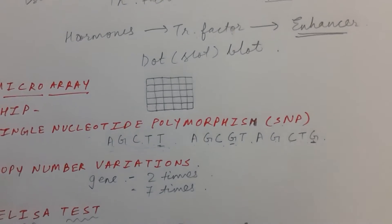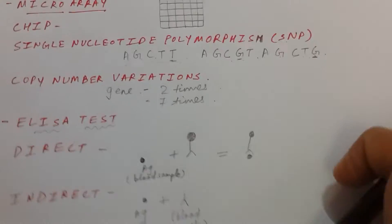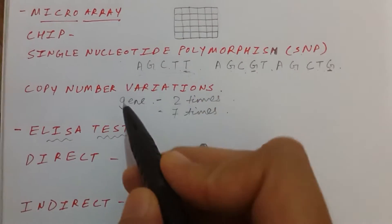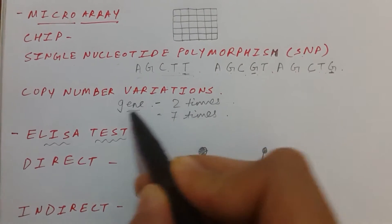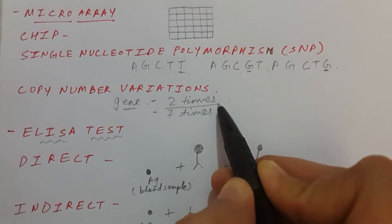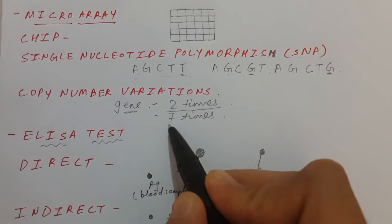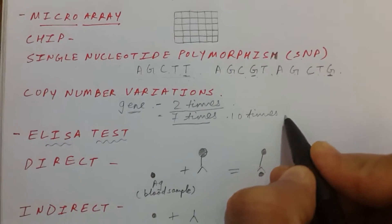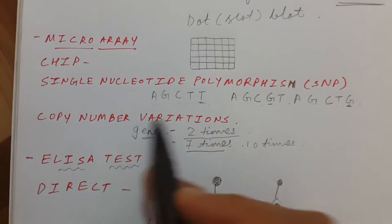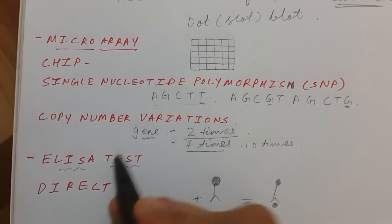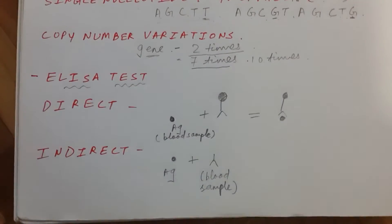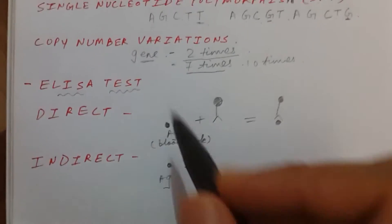This single nucleotide change is one reason why one human being is different from another. Another term is Copy Number Variation. Suppose in one person the same gene is repeated two times on the chromosome, in another person it is repeated seven times, and in some other person it can be repeated ten times. This is called Copy Number Variation.